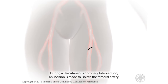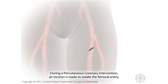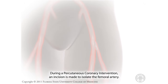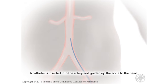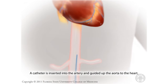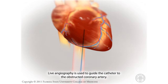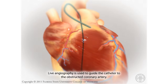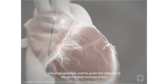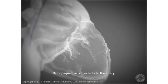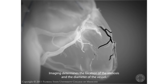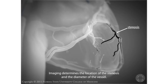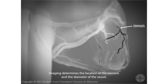During a percutaneous coronary intervention, an incision is made to isolate the femoral artery. A catheter is inserted into the artery and guided up the aorta to the heart. Live angiography is used to guide the catheter to the obstructed coronary artery. Radiopaque dye is injected into the artery, and imaging determines the location of the stenosis and the diameter of the vessel.